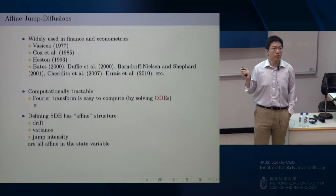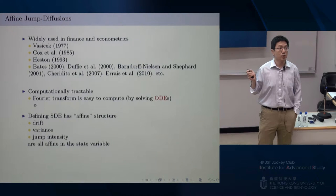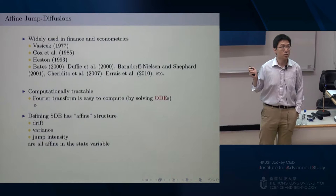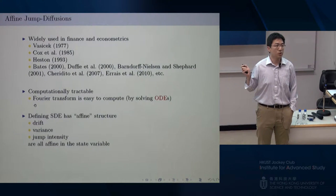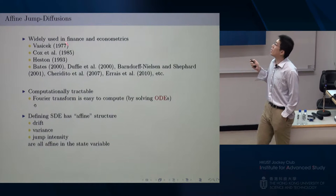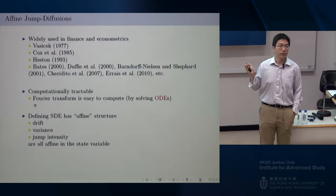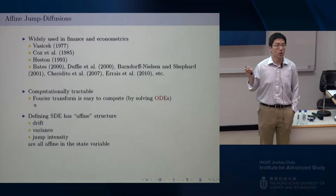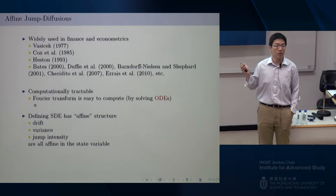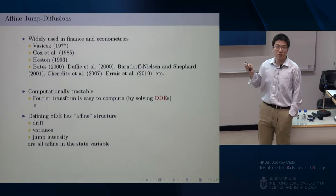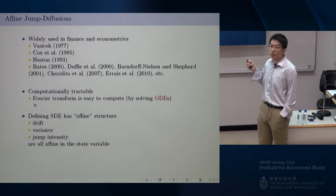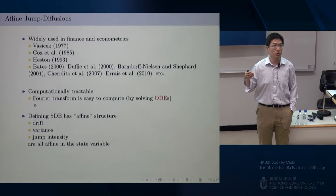The popularity of affine jump diffusions comes from their computational tractability. For example, if you have a general diffusion process and you are interested in its transition density, when you consider the Fourier transform of that transition density, you generally have to solve a partial differential equation or system of PDEs, which would be very hard computationally.